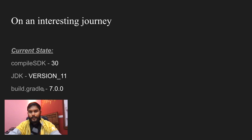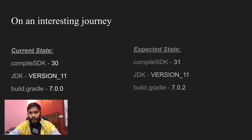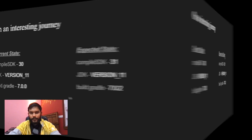Our objective is pretty simple. We have an application which is currently using API 30, Android 11, and we need to convert this application to Android 12 — meaning we need to update it to API 31. The current state has compile and target SDK at API 30, and the expected state should have API 31 in both compile and target SDK.